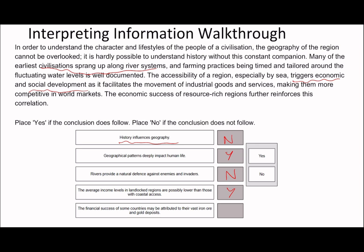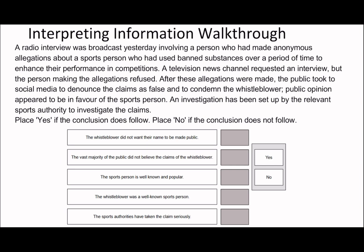Statement five: 'The financial success of some countries may be attributed to their vast iron ore and gold deposits.' The passage says the economic success of resource-rich regions further reinforces this correlation. Now, if you got this statement in verbal reasoning, you'd say can't tell or false because it doesn't specifically mention iron ore or gold deposits. But this is interpreting information — you're allowed to make some inferences. It says resource-rich regions had economic success, so you can say yes, the financial success of some countries may be attributed to their vast iron ore and gold deposits. That's the first question done.